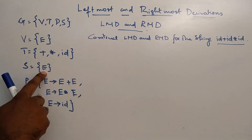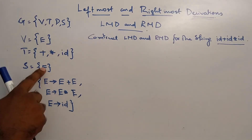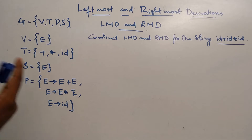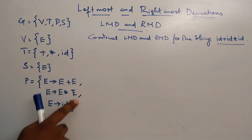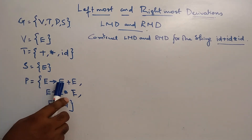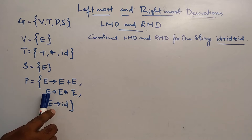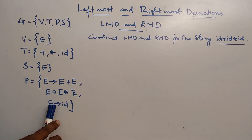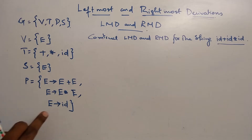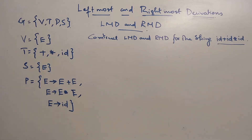Starting production E. The variable is the same. So here we start — productions three. E tends to E plus E, E star E, E tends to ID.